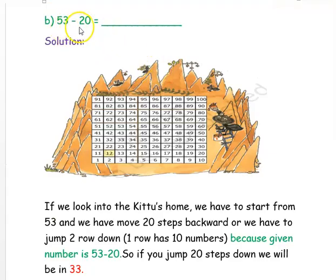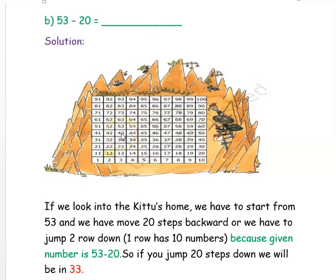The next question is: 53 minus 20 equals ___. Again we find the answer using the number grid. We start from 53, and since it is minus, we go backwards — 20 steps back. Instead of counting backwards, we jump row by row. Since we are subtracting 20, we jump 2 rows up. Jumping 1 row gives 43, then jumping the second row gives 33. So 53 minus 20 is 33.